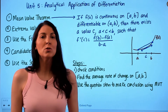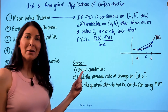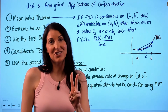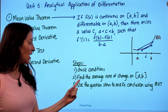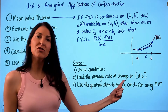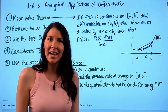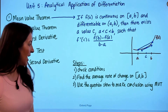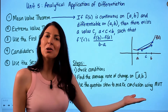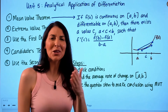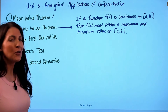Here are the steps to use the Mean Value Theorem to justify an answer on the AP Calculus exam. First, verify the two conditions: f(x) must be both continuous and differentiable on the interval [a, b]. Then find the average rate of change on the given interval — the slope of the secant line between the endpoints. Finally, use the wording in the question stem to make your conclusion using the Mean Value Theorem.